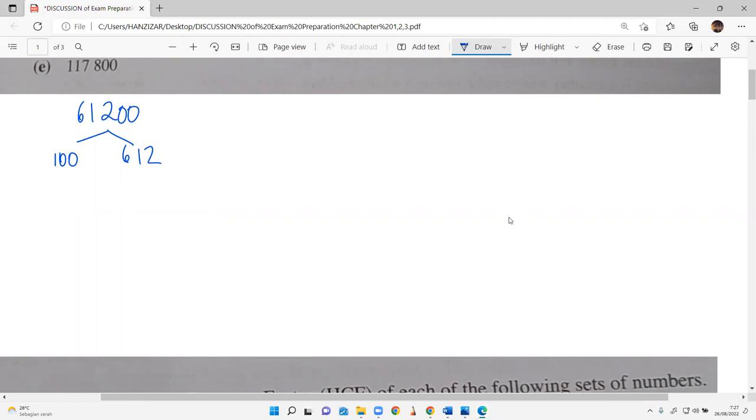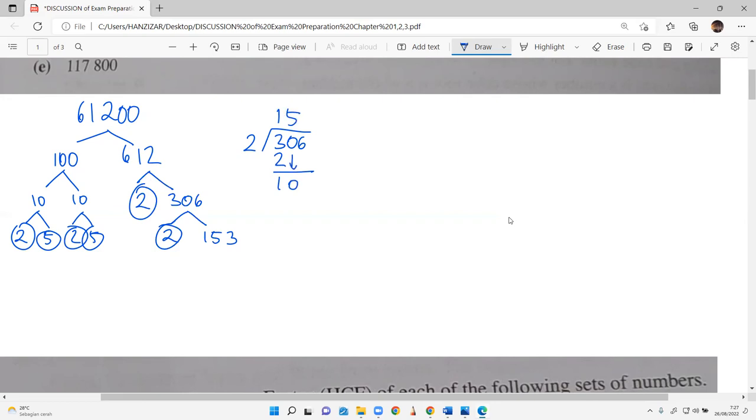100 is 10 times 10. 10 is 2 times 5, and 2 times 5. I circle the numbers that cannot be broken down anymore, that's called prime numbers. And 612, I'm gonna use 6 and 102. Then 2 and 306, then 2 and 153. How do I solve this easily? I just divide by 2 as usual.